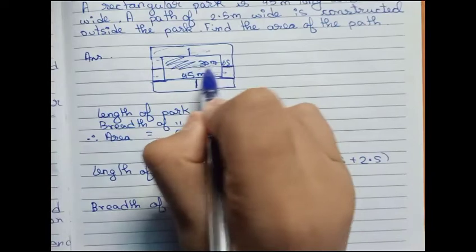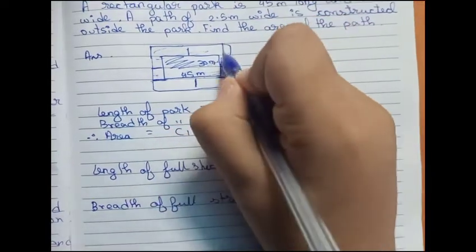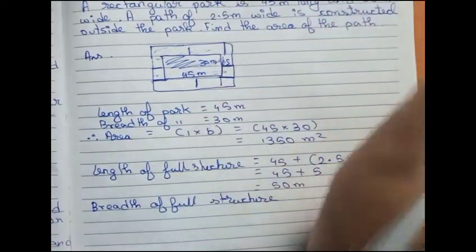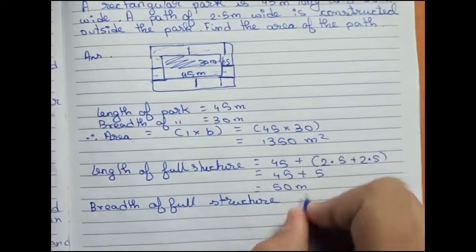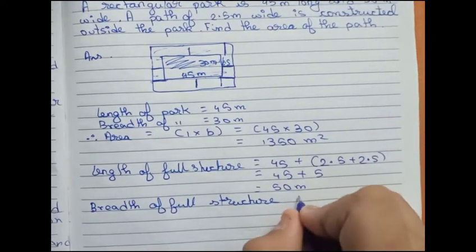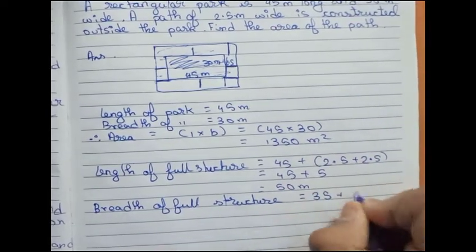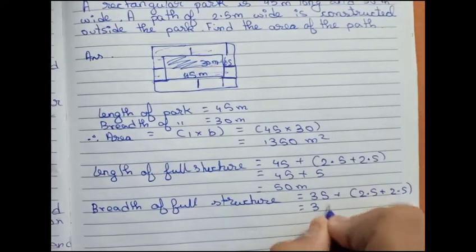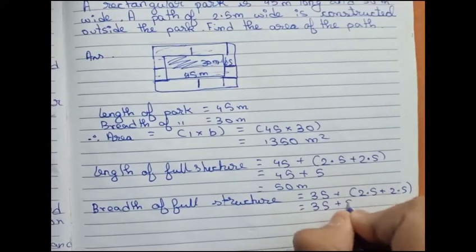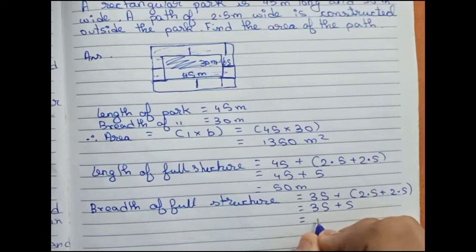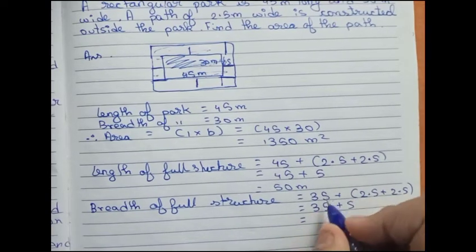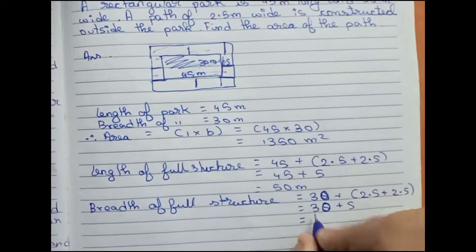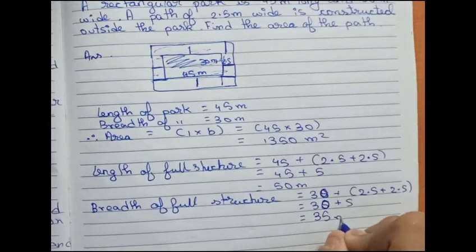Similarly, breadth of the full structure: the upward and downward portions are also 2.5 meters each. So we add 2.5 plus 2.5 to the park breadth of 30 meters, giving 30 plus 5, which equals 35 meters.